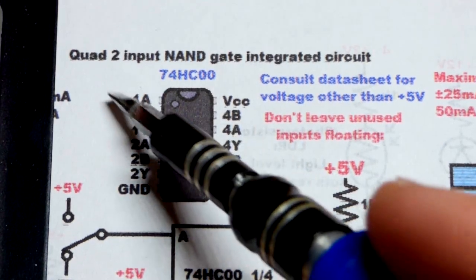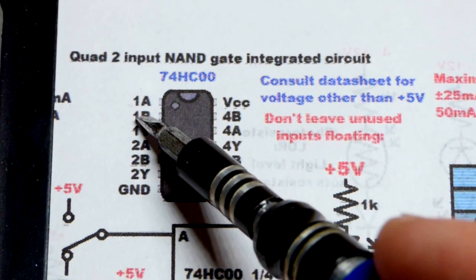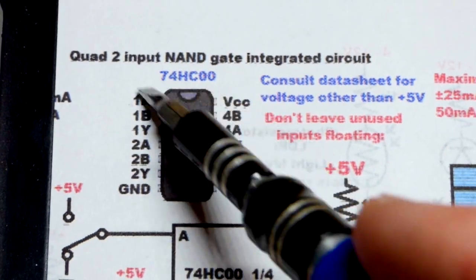So now in this video we're going to look at the integrated circuit here. That's a quad. There's four of them. One, two, three, four.